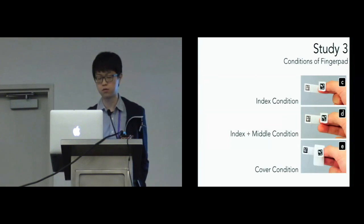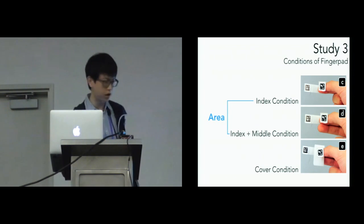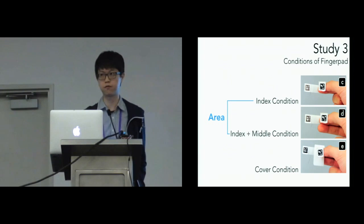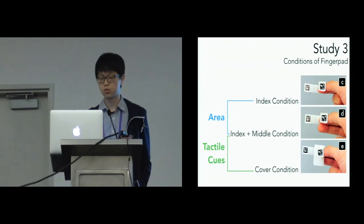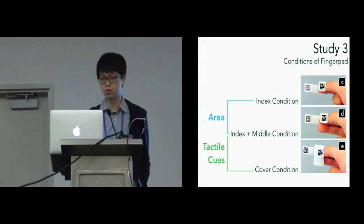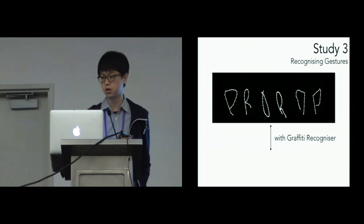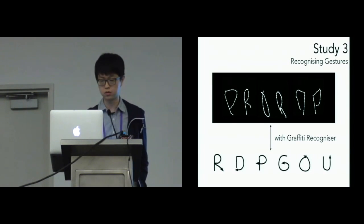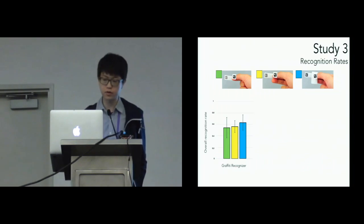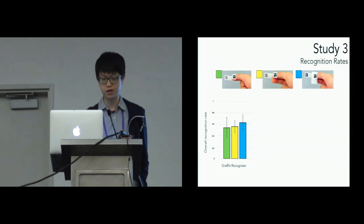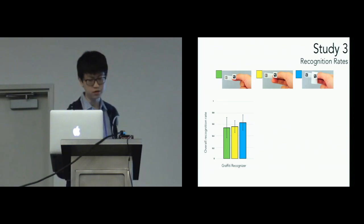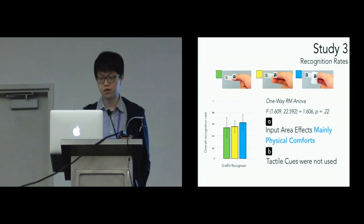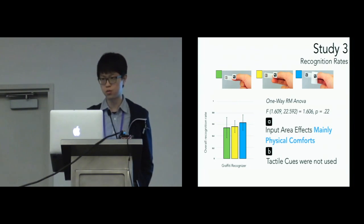We designed three conditions: index condition, index-plus-middle condition, and cover condition. The first two conditions examine whether input area affects accuracy of stroke gestures. The last two conditions examine whether blocking tactile cues on fingers interferes with performing Graffiti gestures. Trajectories were fed to the Graffiti recognizer and the system computed overall recognition rates. However, the result was disappointing — overall recognition rates were only nearly 60%, and one-way ANOVA suggests neither input area nor tactile cues significantly affected performance.